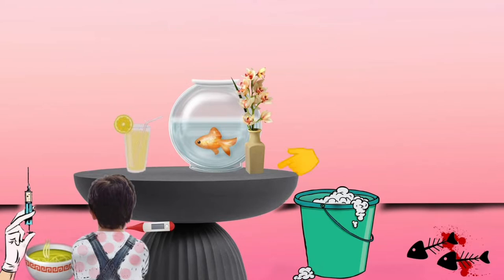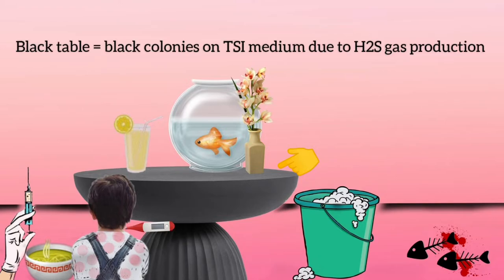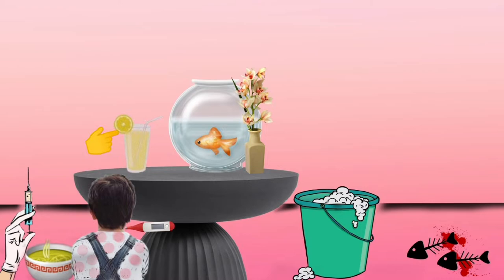The fish bowl is kept on a black table. The black table represents the formation of black colonies on TSI medium, and the black color of the colonies is due to the production of H2S gas. So Salmonella produces hydrogen sulfide gas in the TSI (triple sugar iron) medium.